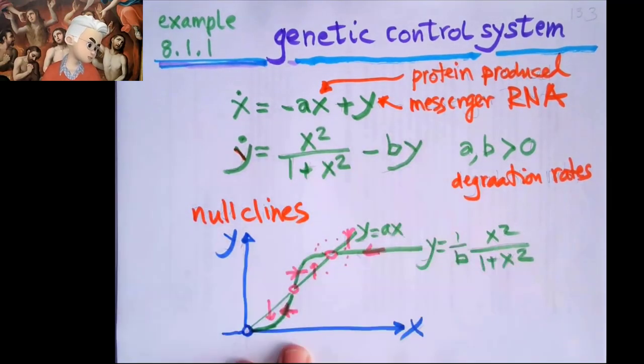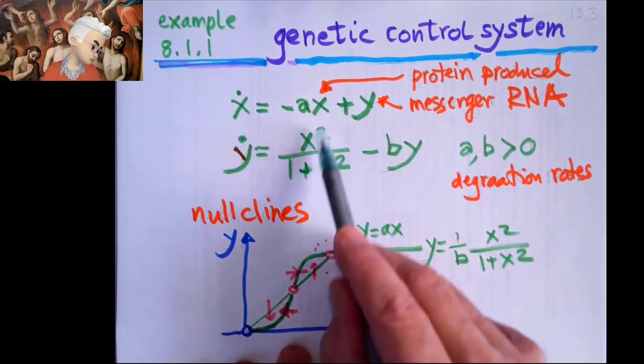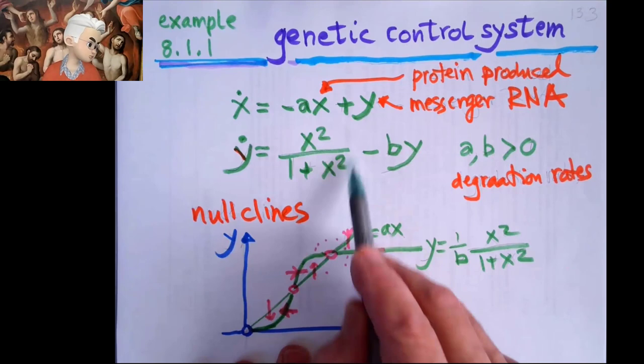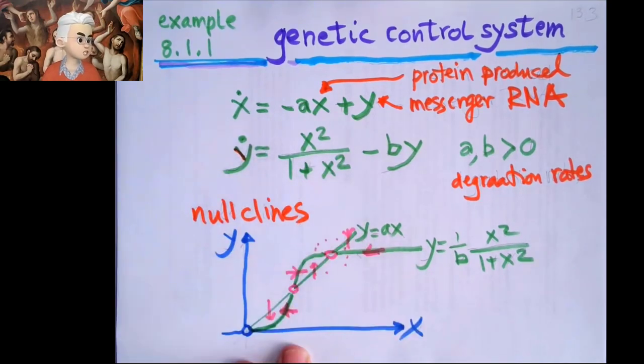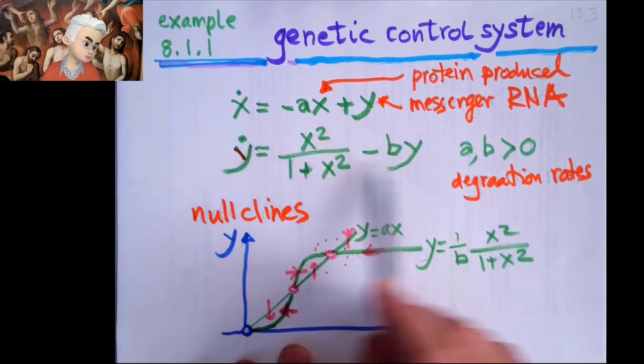This says that is the death. And this term says that if I have too many proteins, this saturates. I cannot have arbitrarily high rates of production of RNA. So that's what these steps look like.